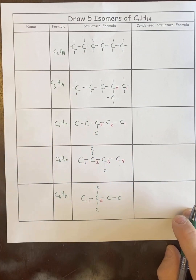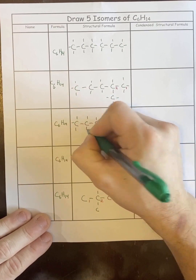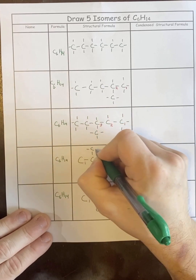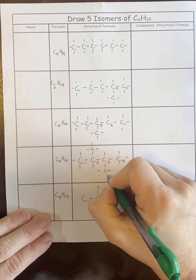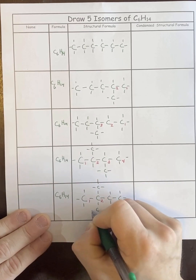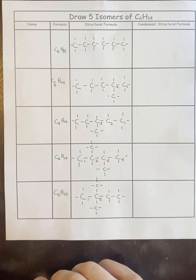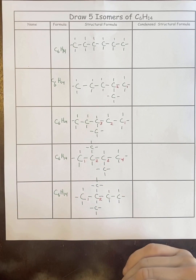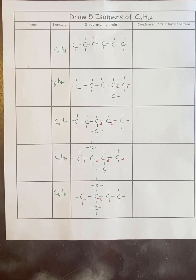Let's draw all our H's in. To double-check, make sure every carbon has four bonds, count the number of H's, and confirm you have six carbons and fourteen H's every single time. Once you've done that, you've done them all right.